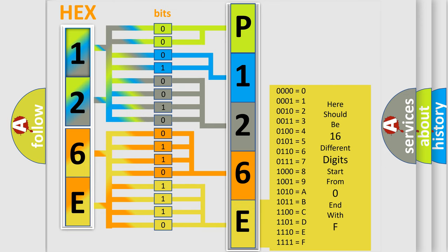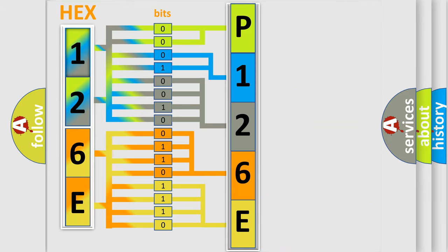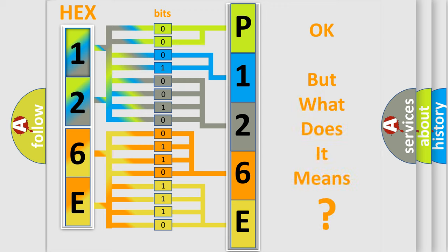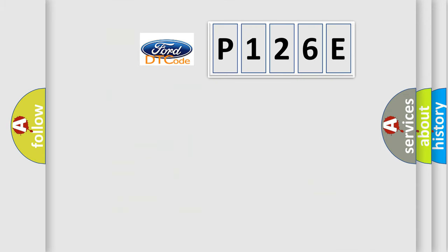We now know in what way the diagnostic tool translates the received information into a more comprehensible format. The number itself does not make sense to us if we cannot assign information about what it actually expresses. So, what does the diagnostic trouble code P126E interpret specifically for Infiniti car manufacturers?